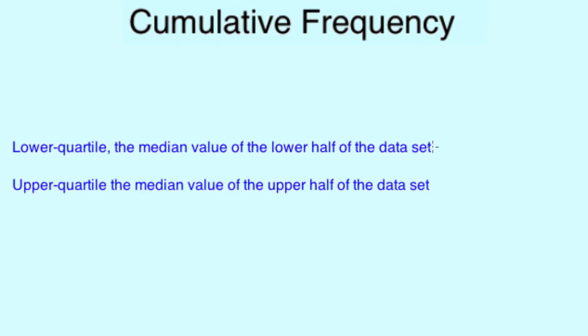Now we've found our median, we can also find our quartiles. We have two quartiles: a lower quartile, which is a quarter of our total cumulative frequency, and an upper quartile, three quarters of our total cumulative frequency.